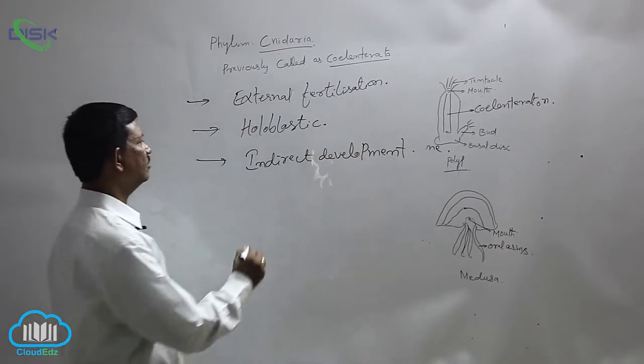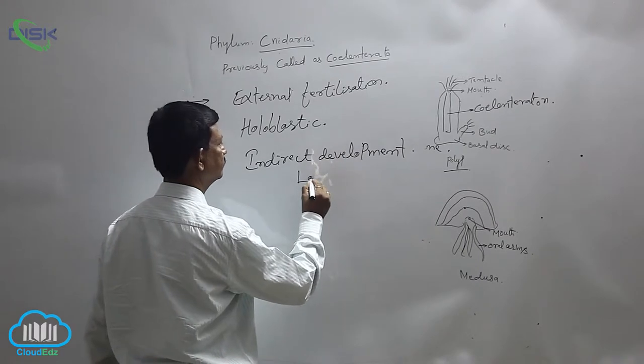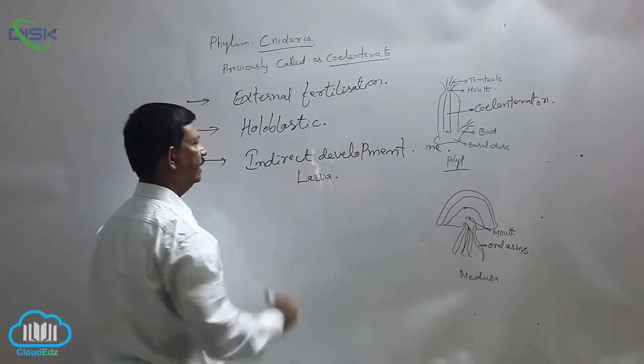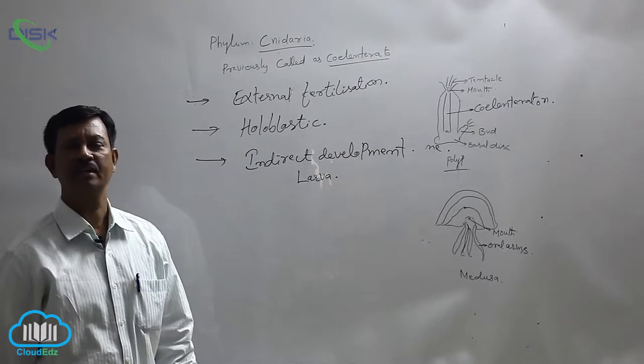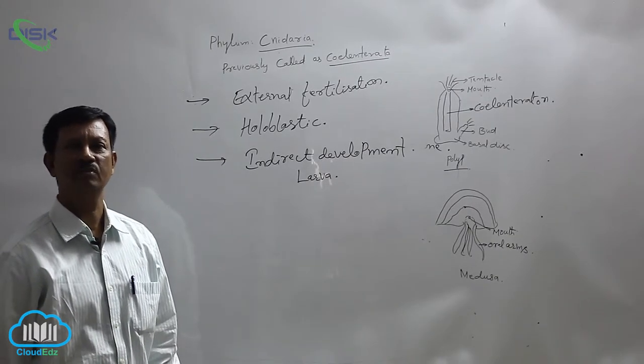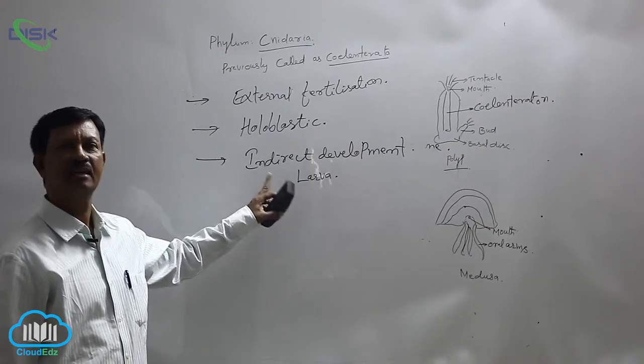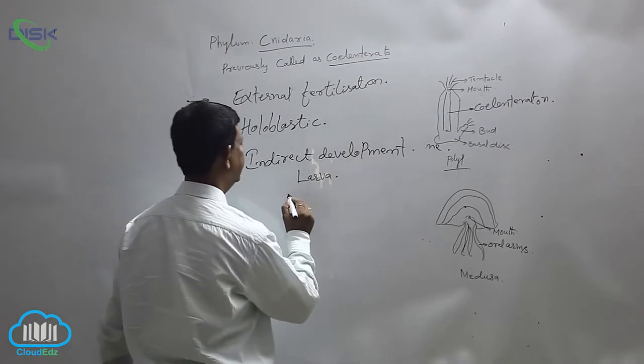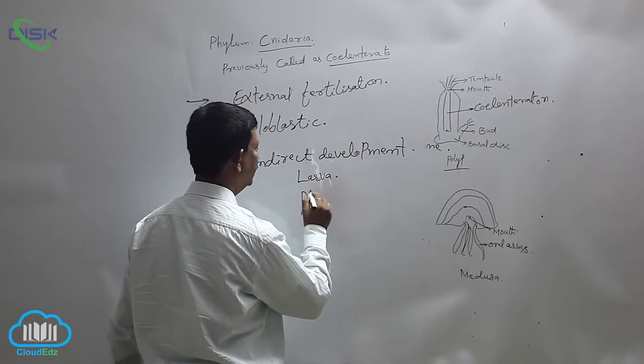Indirect development means the presence of larvae. The larvae does not resemble the adult; there are many dissimilarities between the larvae and adult, which is why the development is indirect. The larvae is ciliated and known as the planula larva.